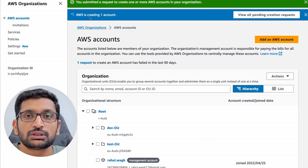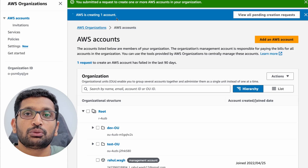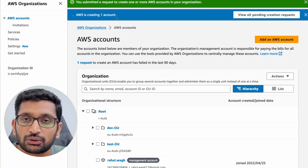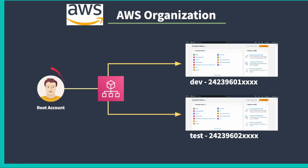AWS is now creating the new account. You already have a root account, and now we are creating one more account. Once you create these kinds of accounts, you will also get a root user for that particular account. So initially there was a root user for your existing sign-up account. When you create the test account, you also get a root user for that test account. Each account you create will always have a root user, and that root user will have all privileges for that particular account.